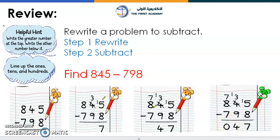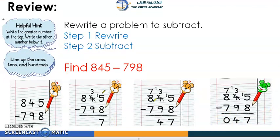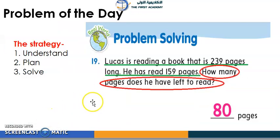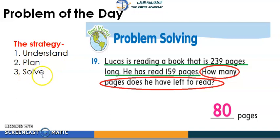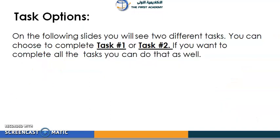Finally, 13 minus 9 equals 4, and 7 minus 7 equals 0. Well done, everyone! For the problem of the day, remember the strategies: circle the numbers, find the keywords, and follow the steps — understand, plan, and finally solve.